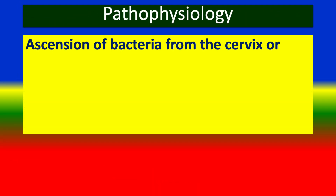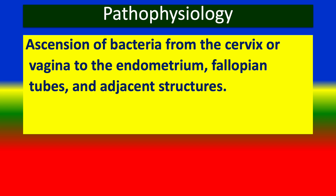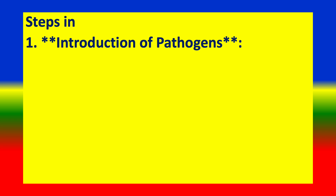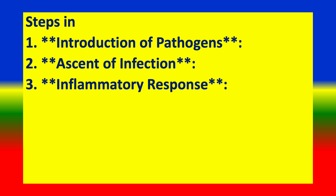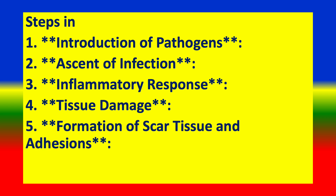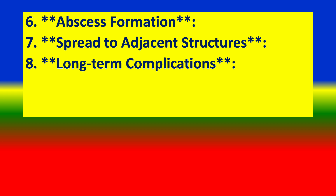Pathophysiology: Ascension of bacteria from the cervix or vagina to the endometrium, fallopian tubes, and adjacent structures. Steps in pathophysiology: 1. Introduction of pathogens. 2. Ascent of infection. 3. Inflammatory response. 4. Tissue damage. 5. Formation of scar tissue. 6. Adhesions. 7. Abscess formation. 8. Spread to adjacent structures. 9. Long-term complications.